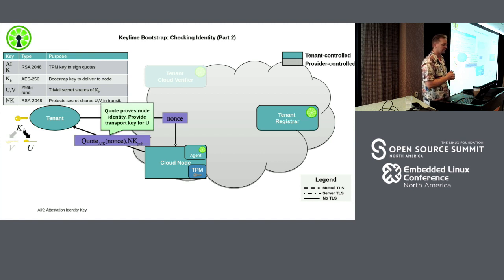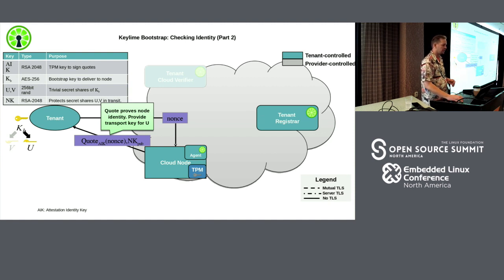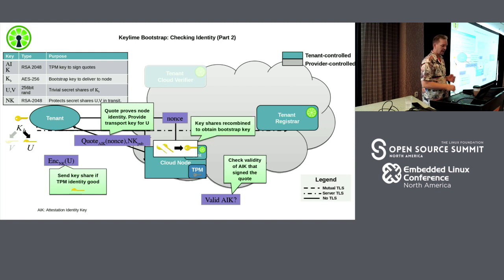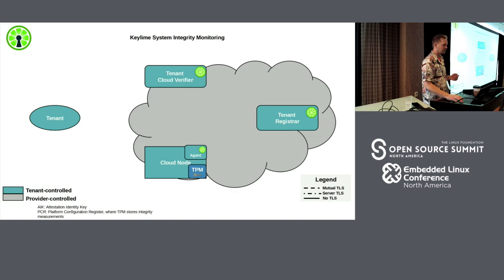This is the 'demonstrate intent' step. Similarly to what the verifier did, the tenant now asks for a quote, verifies it with a nonce to ensure freshness, checks that it's a valid AIK, and if everything comes back good, passes its U half down. Now the cloud node has both halves, recombines them, decrypts the encrypted provisioning manifest, and brings itself up.